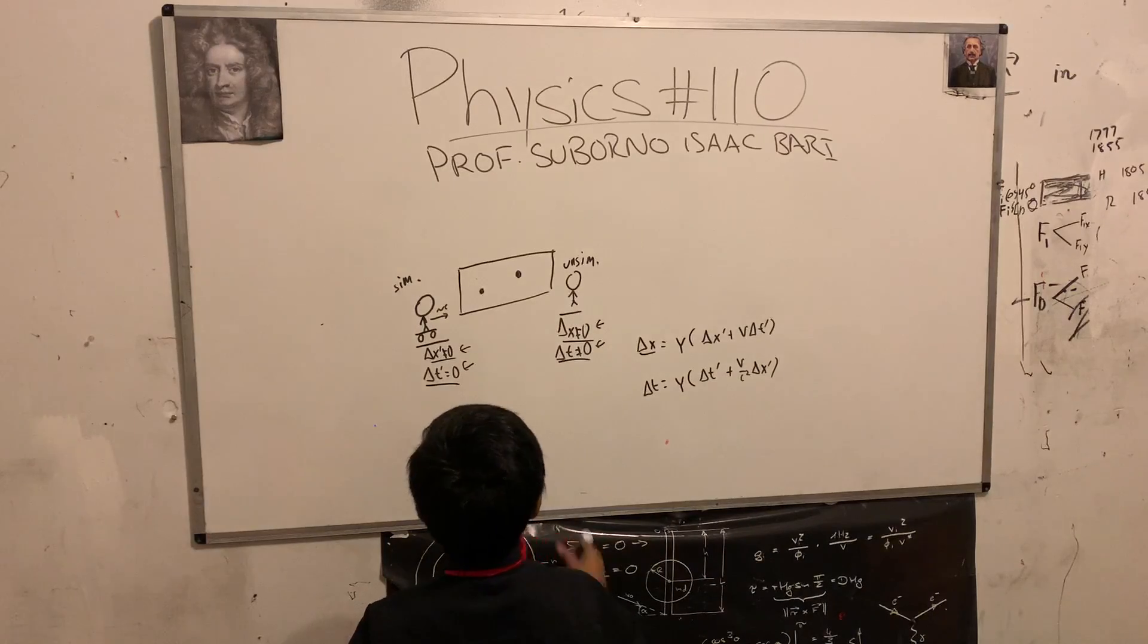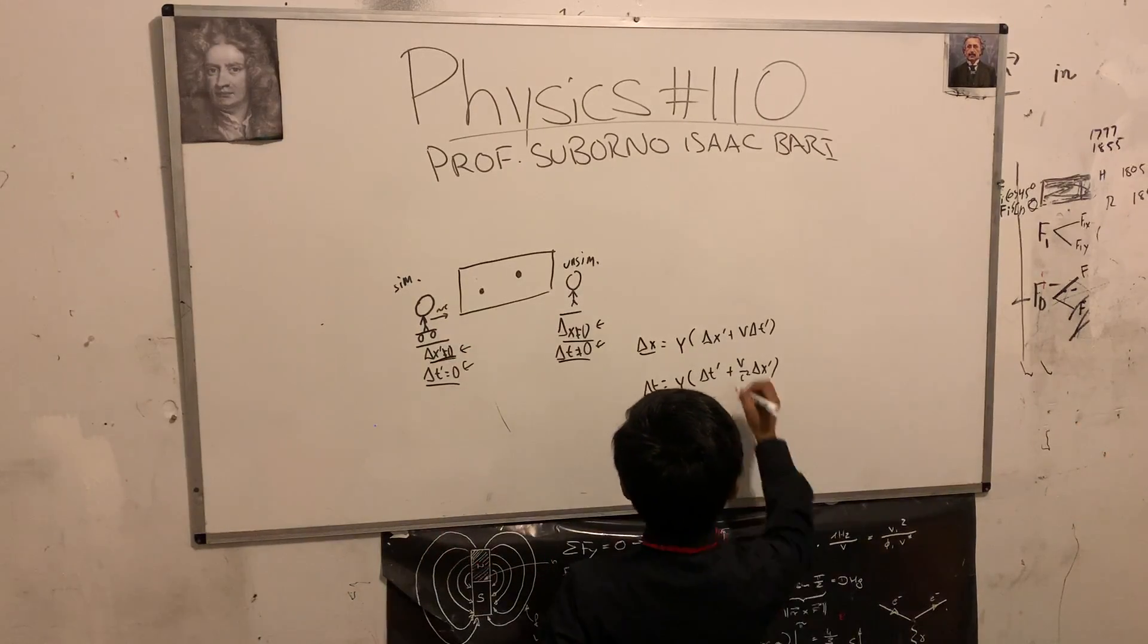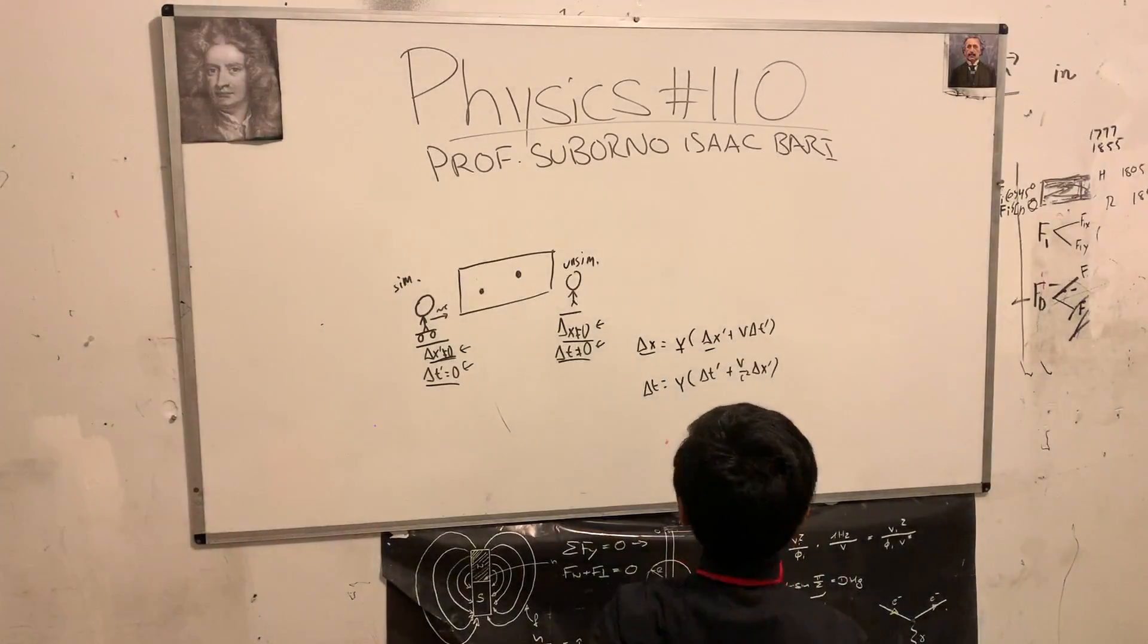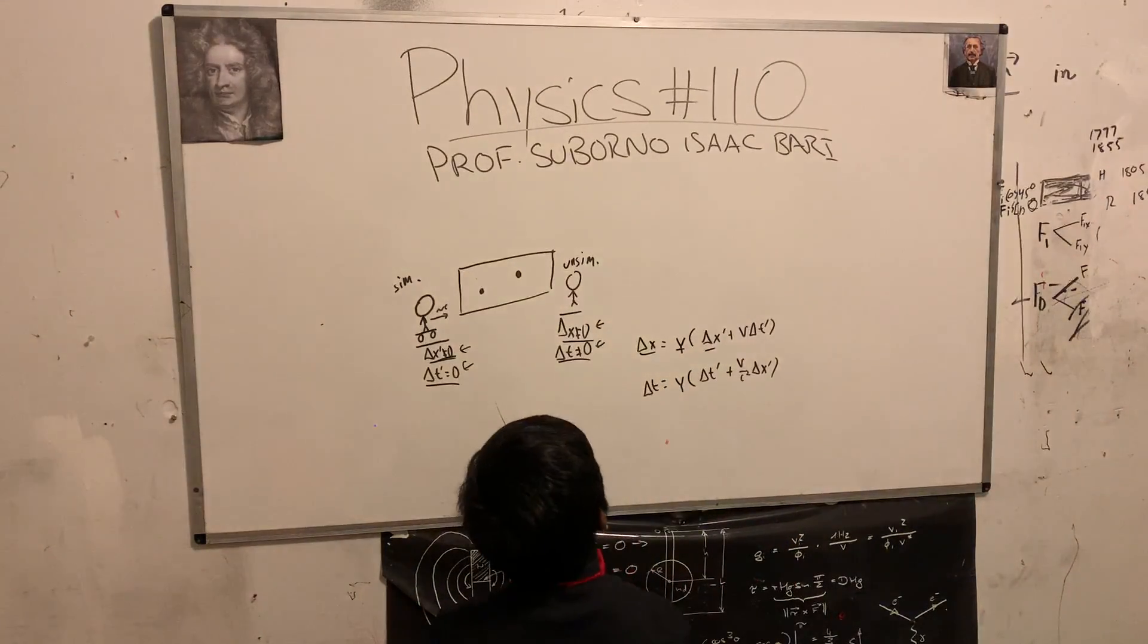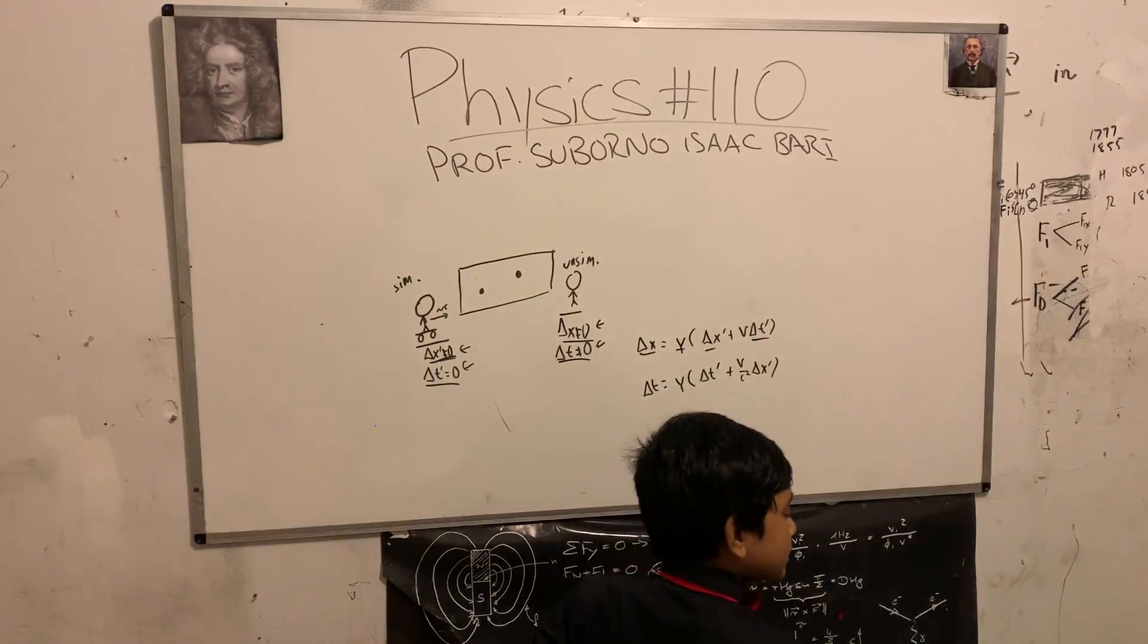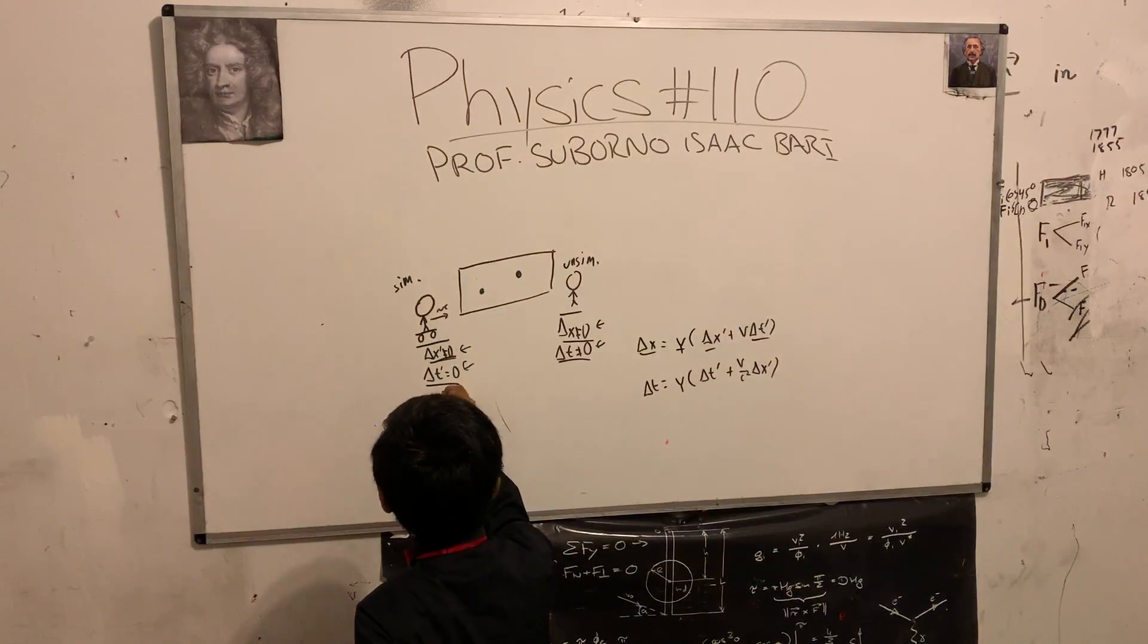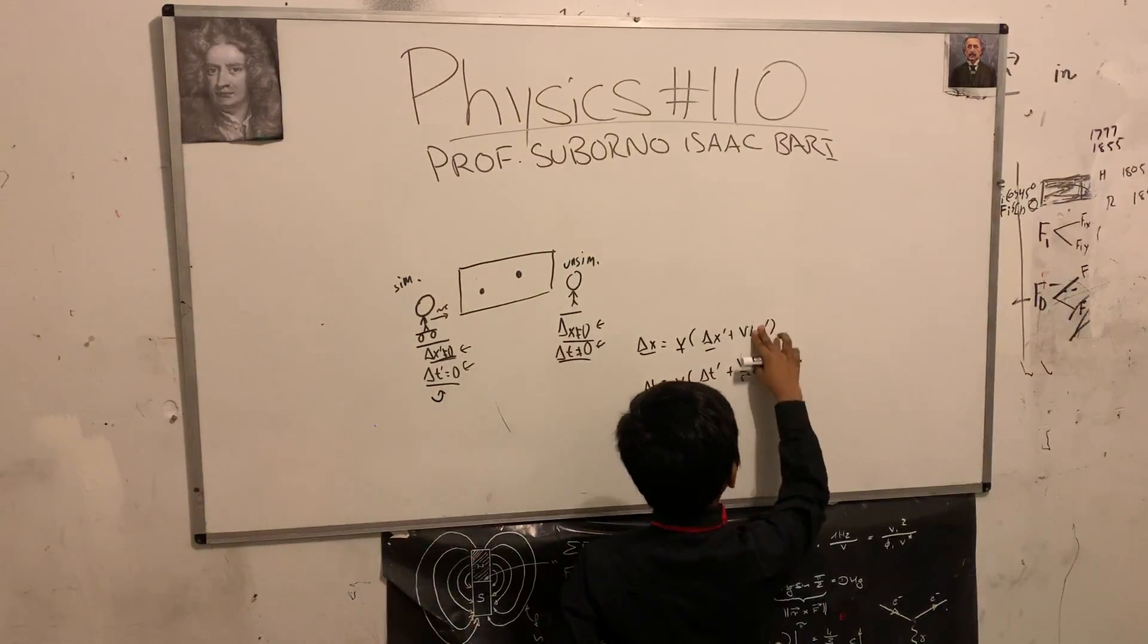Now delta x prime not equal zero we've observed, so we can also safely leave that, and yeah, definitely not equal to zero in any sort of situation. However, this delta t prime is when things start to get interesting because delta t prime is equal to zero.